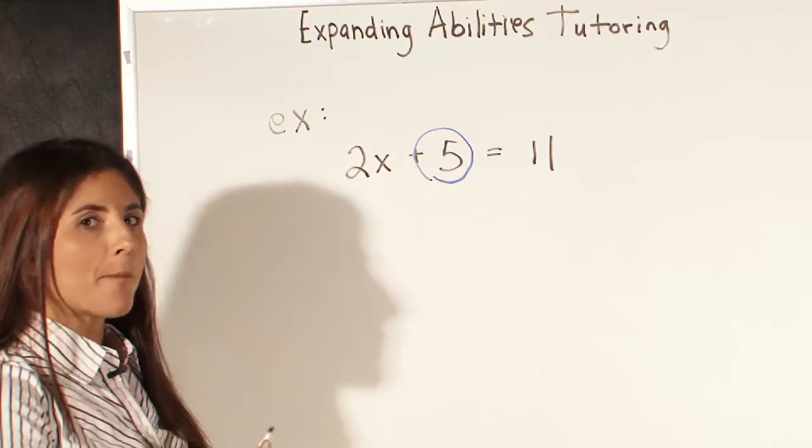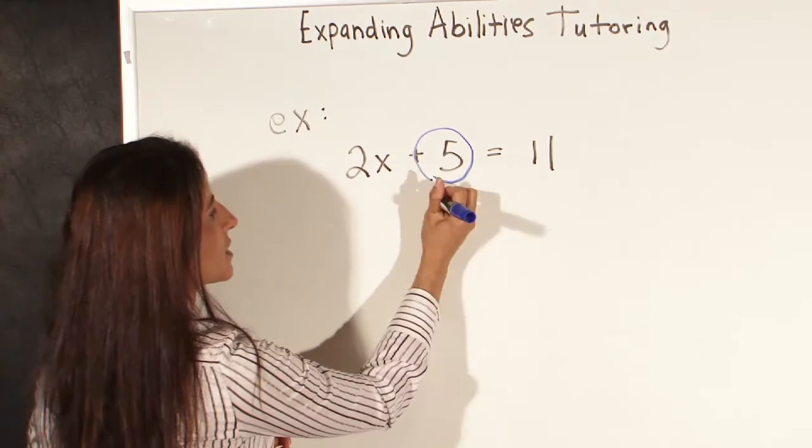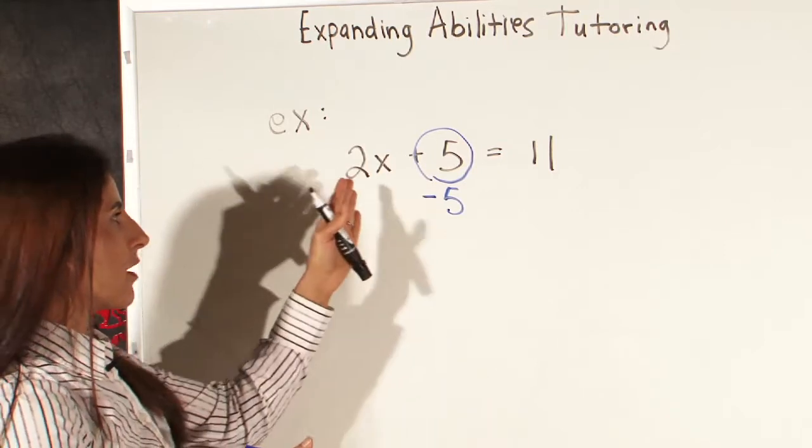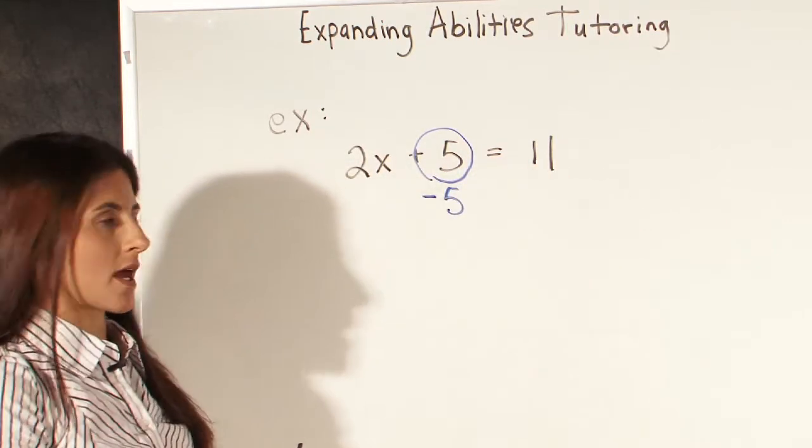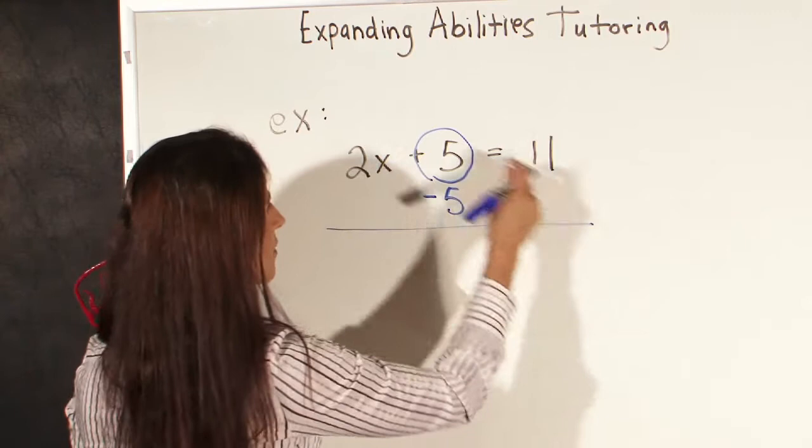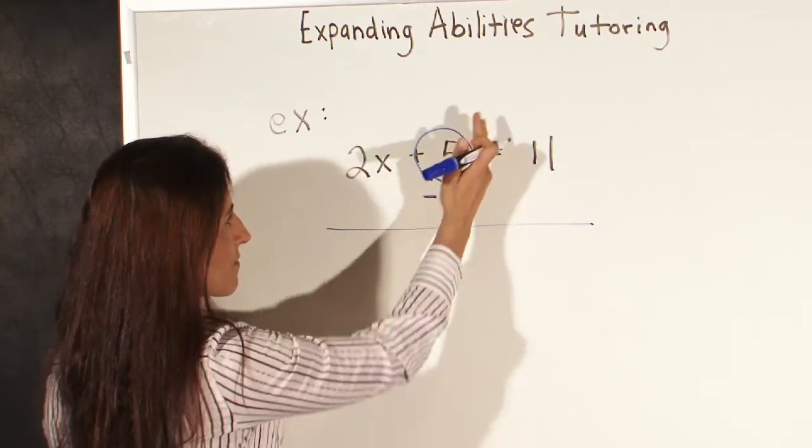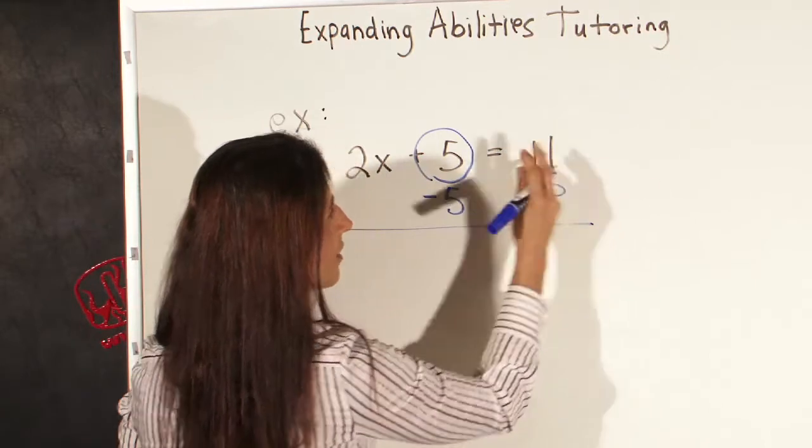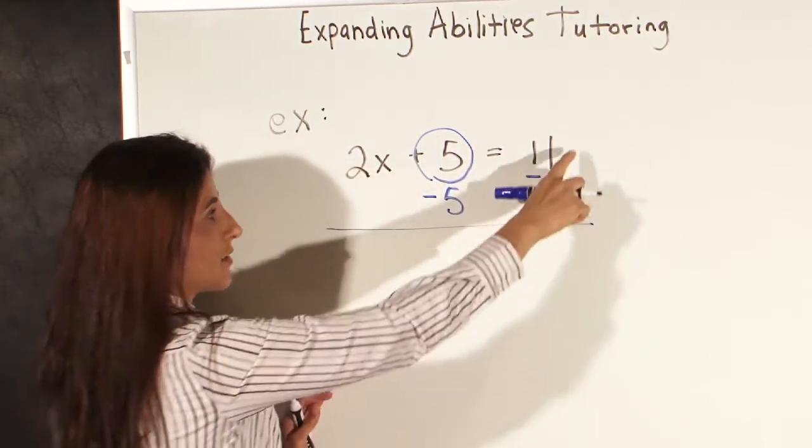So what we're going to do is the opposite of plus 5, which is subtract 5. And when we do that, we need to do it on both sides of the equal sign. So here we have minus 5 from this side of the equal sign, and we're also going to subtract 5 on the other side of the equal sign underneath the 11.